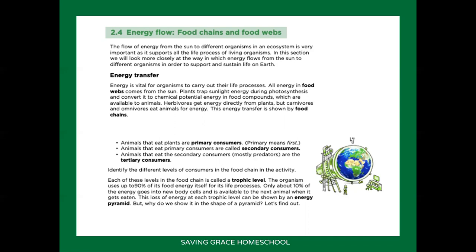Many food chains connected together form a food web. Animals that eat plants are primary consumers. Animals that eat primary consumers are called secondary consumers. And animals that eat secondary consumers — mostly your predators — are called tertiary consumers. Each level in the food chain is called a trophic level. An organism uses up to 90% of its food energy itself, which means there is only 10% left for the next animal that is going to eat it.